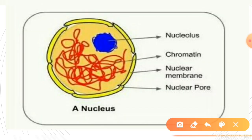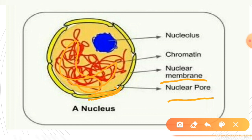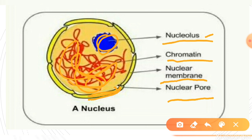This is the detailed structure. The outer membrane is called the nuclear membrane. The two openings in the membrane are called nuclear pores. The dense, thread-like, intertwined structure inside is called chromatin, which contains DNA. The bluish part is the nucleolus, which contains RNA. Both chromatin and nucleolus also contain their own proteins.